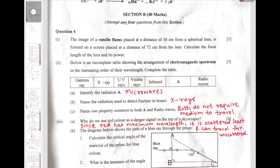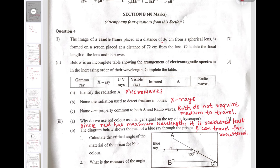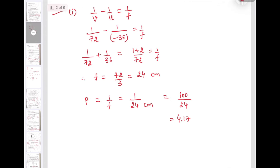Question number 4: The image of a candle flame placed at distance of 36 cm from the lens is formed on the screen placed at distance 72 cm. Since the image is formed on the screen, the lens is convex and image distance is 72 cm. Using the lens formula and substituting values with sign convention, we get focal length of lens 24 cm and power 1 upon F, that is 4.17 diopter.